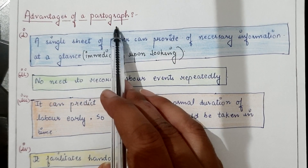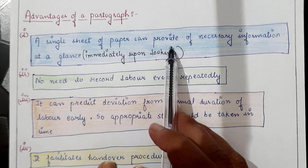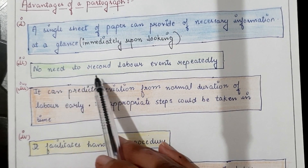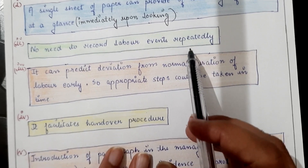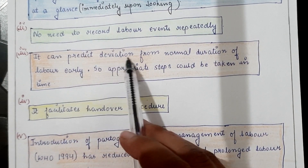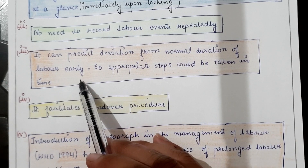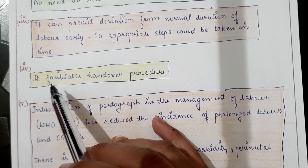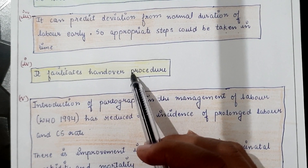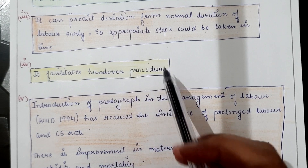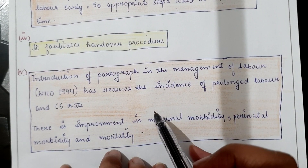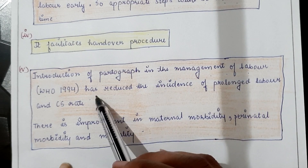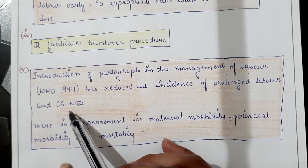Advantages of the partograph: a single sheet of paper provides all necessary information at a glance, with no need to record labor events repeatedly. It can predict deviation from normal labor duration early, using the alert and action lines, so appropriate steps can be taken in time. It facilitates handover procedure. The introduction of the partograph in labor management has reduced the incidence of prolonged labor and caesarean section rates, and has improved maternal morbidity, perinatal morbidity and mortality.